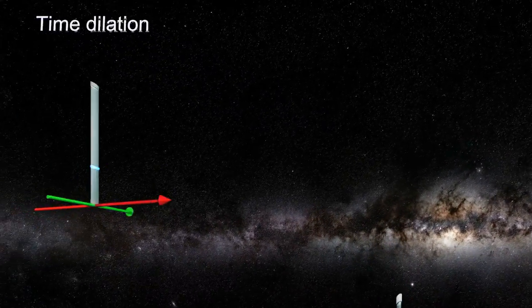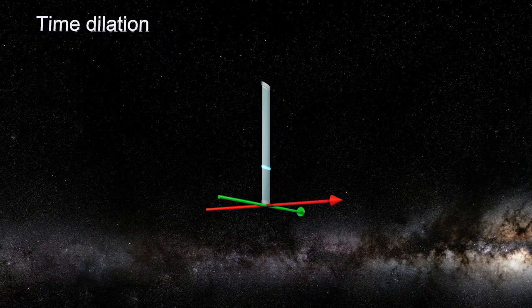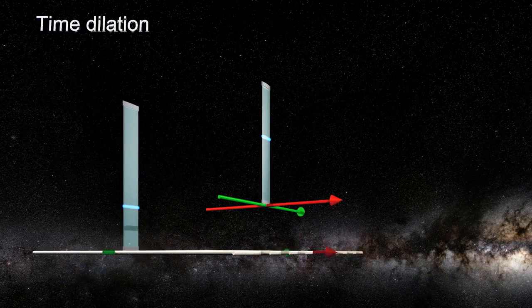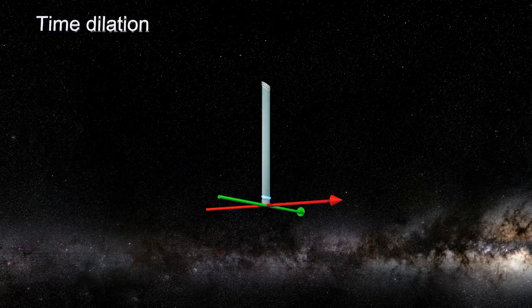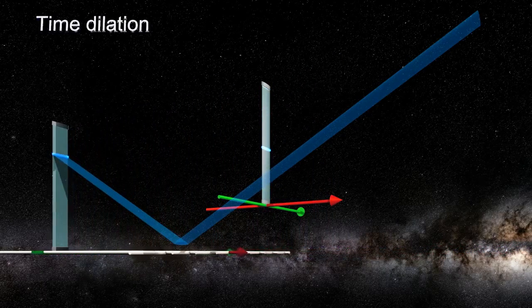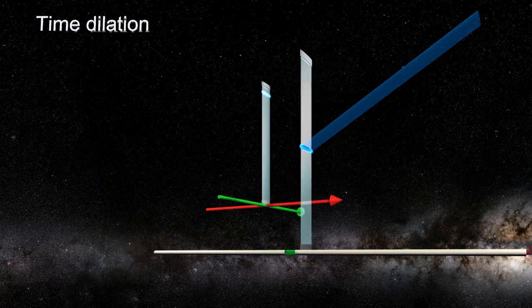But then, how does the stationary clock appear in the moving frame? Since the laws of physics are the same for any inertial frame, the moving frame sees the stationary clock running at a time dilated rate as well.